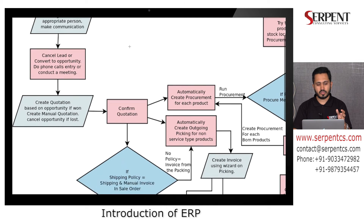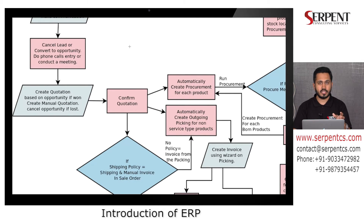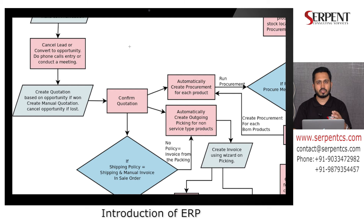From the opportunity, the customer will ask for a quotation and we generate a quotation in the system. At that point, the sales module comes into the picture. From CRM we generate a quotation, send it to customers, the customer negotiates, we generate different revisions of quotations, and then we generate a sale order. So the sale order will be integrated with CRM.